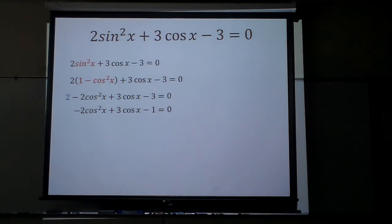Alright, that 2 will go with that 3, adding 2 to x, they're on the same side. So now I have negative 2 cosines squared x plus 3 cosines x minus 1 equals 0.